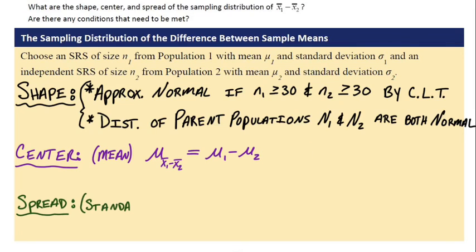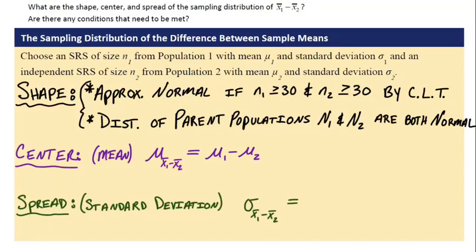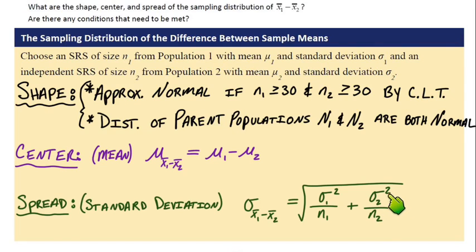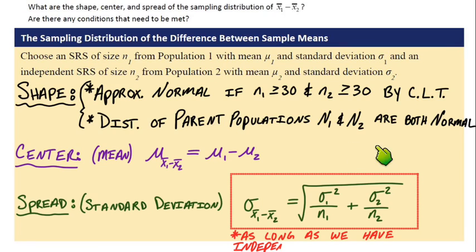The spread of the distribution actually relies on the independence condition. We measure spread with standard deviation. The notation is sigma with subscript x bar 1 minus x bar 2, and then we take the square root of the standard deviation from the first one squared over the sample size from the first population, plus the standard deviation of the second one squared over the sample size from the second group. The independence condition — typically we use the 10% rule — is what this formula relies on.